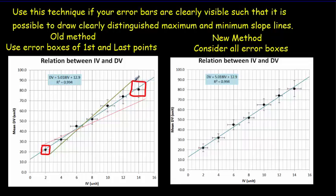What you do is you put your error boxes in, and for your maximum slope line, you go from that bottom right-hand corner up to this top left-hand corner of the last box.